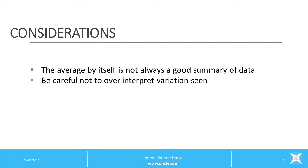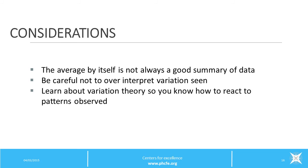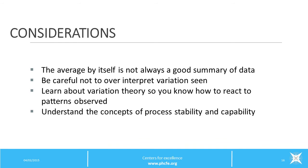Another consideration is to be careful not to over-interpret the variation that you see. Key to this is having a working knowledge of variation theory — understanding what is common or expected variation versus special cause variation. You also need to understand process stability, meaning a process that is stable, in control, and producing predictable results, and process capability, meaning the ability of a process to meet known customer needs. These concepts are covered in separate tutorials.